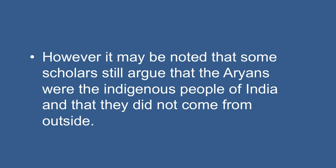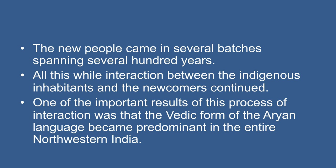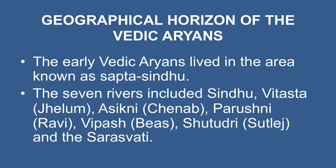Some scholars still argue that the Aryans were the indigenous people of India and did not come from outside. The new people came in several batches spanning several hundred years. All this while, the interaction between indigenous inhabitants and the newcomers continued. One important result of this interaction was that the Vedic form of the Aryan language became predominant in the entire North-West India. The early Vedic Aryans lived in the area known as Sapt Sindhu, meaning the area of seven rivers, largely covering the North-Western part of South Asia up to the river Yamuna.